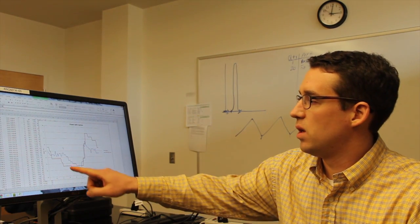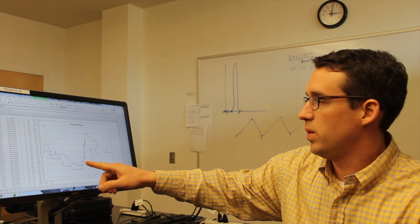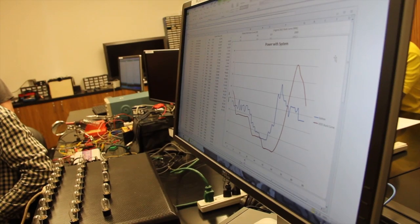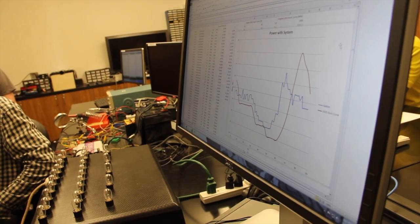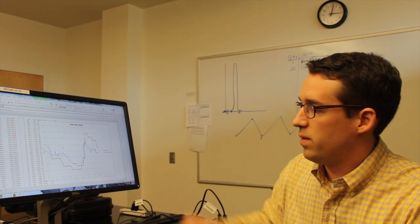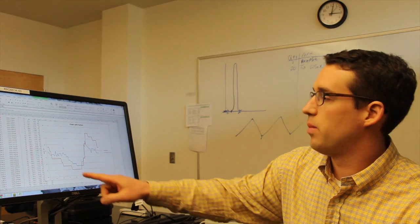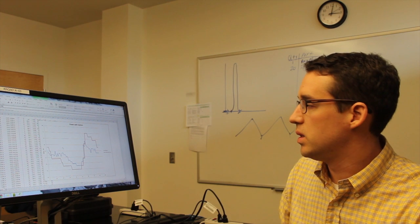So basically here on the graph, we have our power output that we're using with our system. The blue line is that. We took our voltage times our current to get that output. The red here shows the duck curve from 2015 that has been simulated. And you can definitely see a lot more steeper slopes, greater peaks and valleys.